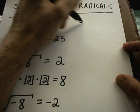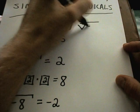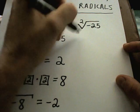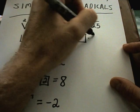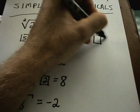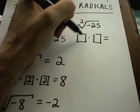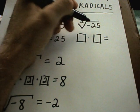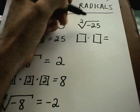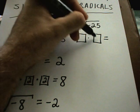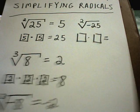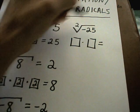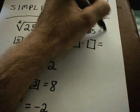Suppose I wanted the square root of negative 25. I need a number multiplied by itself twice that gives me a negative number. A positive times positive won't give a negative. But notice, a negative times negative won't give a negative either. So the square root of negative 25 has no solution.